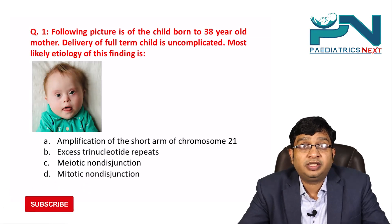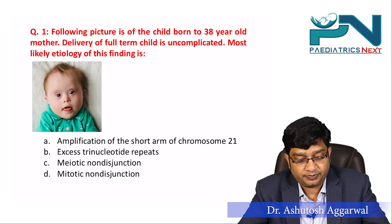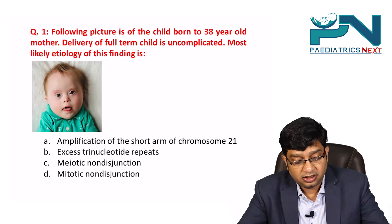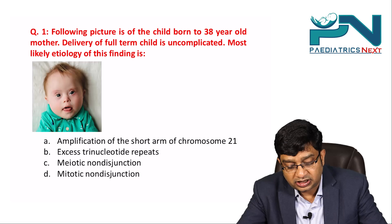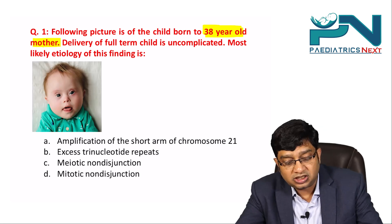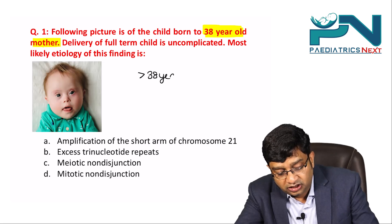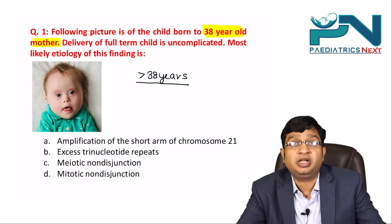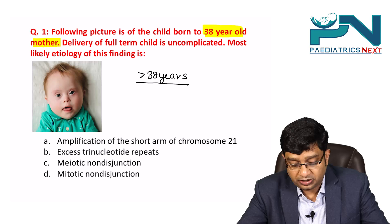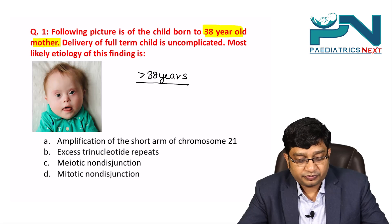Welcome to the next session of MCQs on genetics, particularly on chromosomal disorders. The first question: the following picture is of a child born to a 38-year-old mother. The delivery of the full-term child was uncomplicated, with no adverse events in the pregnancy. What is the most likely etiology of this finding?